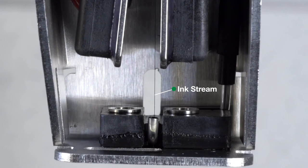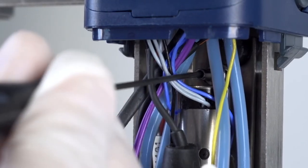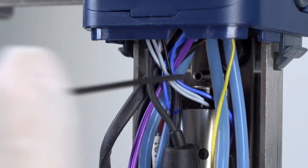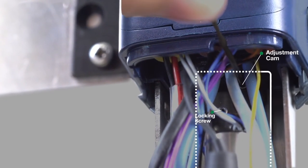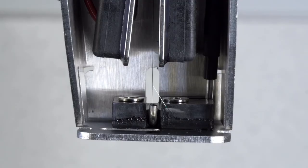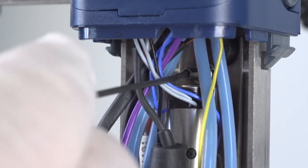To adjust the ink stream horizontally, left to right, ensure that the locking screw is loose. Then, turn the adjustment cam until the ink stream is 75% to the left of the gutter as shown. Once aligned, tighten and lock the locking screw in place.